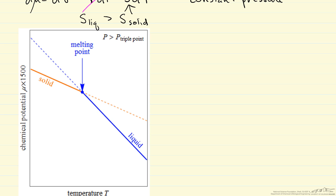We can see the larger absolute value slope is for the liquid. Namely, higher entropy for the liquid means the chemical potential decreases more.